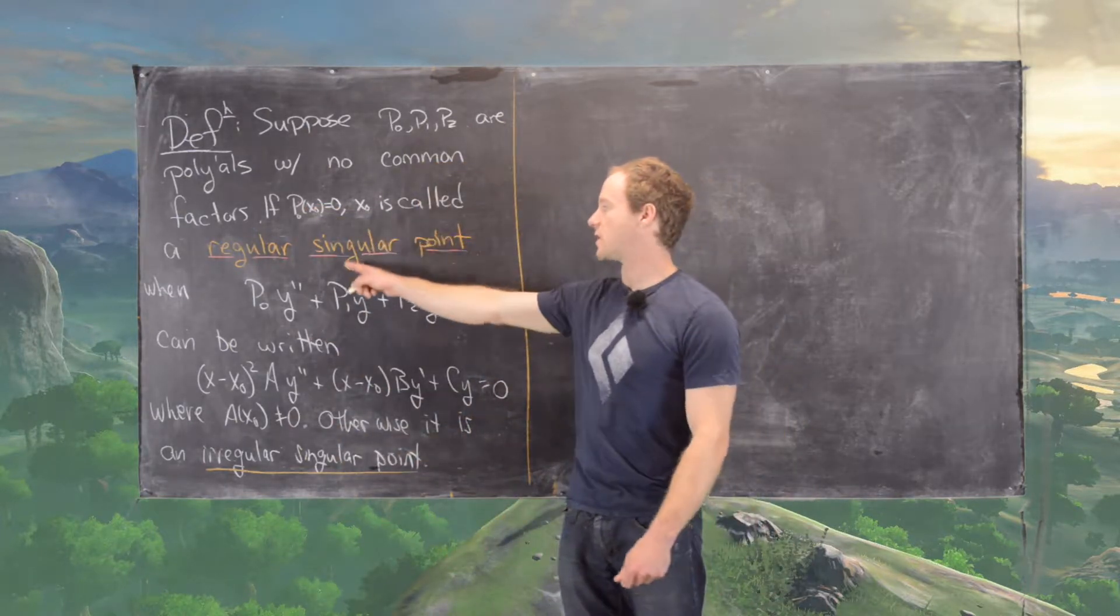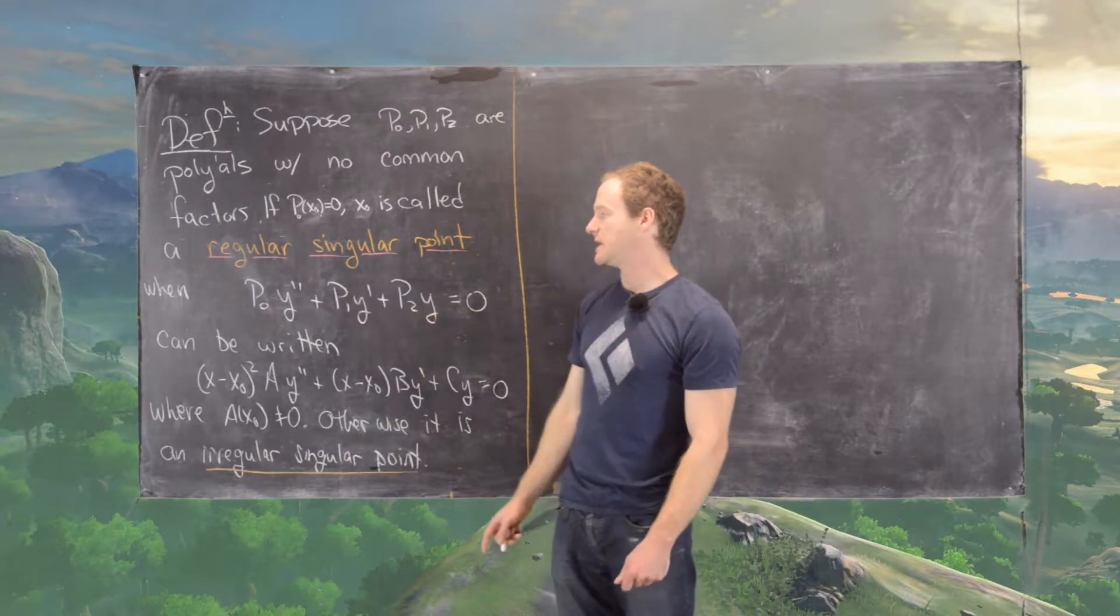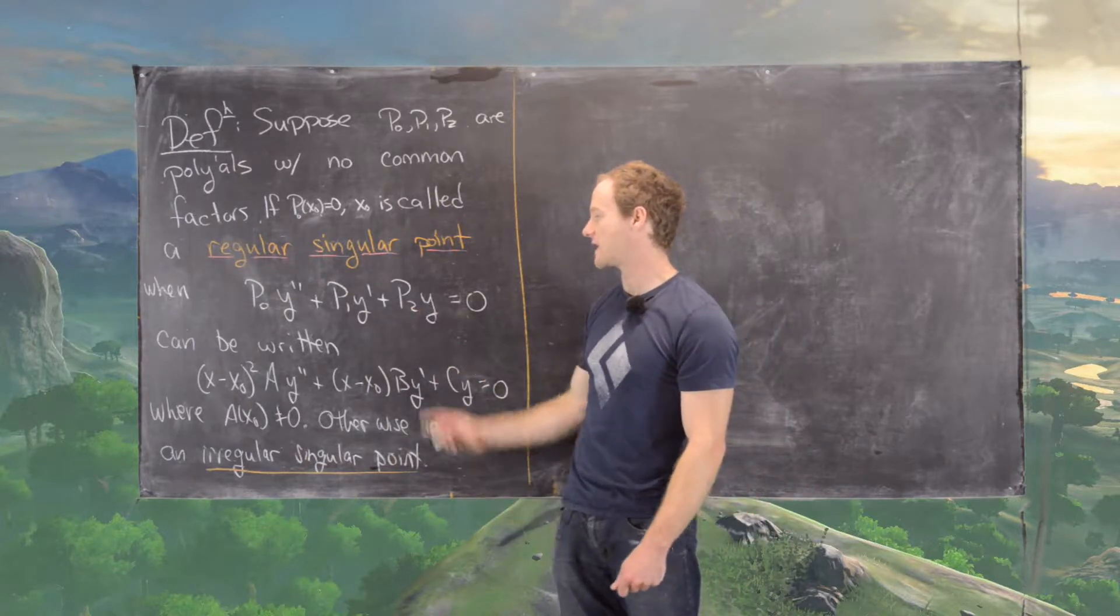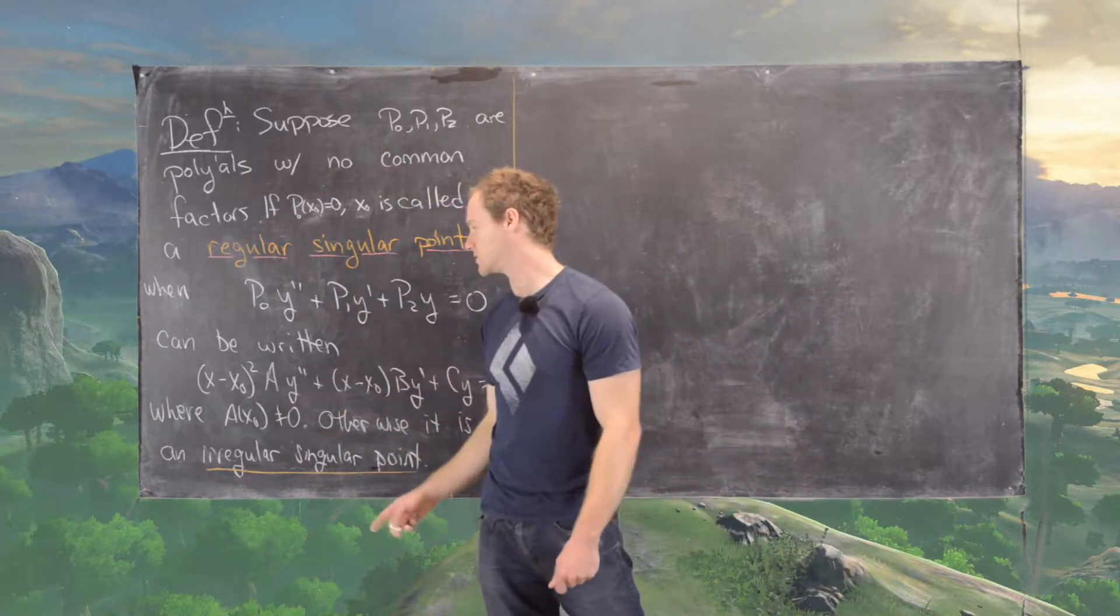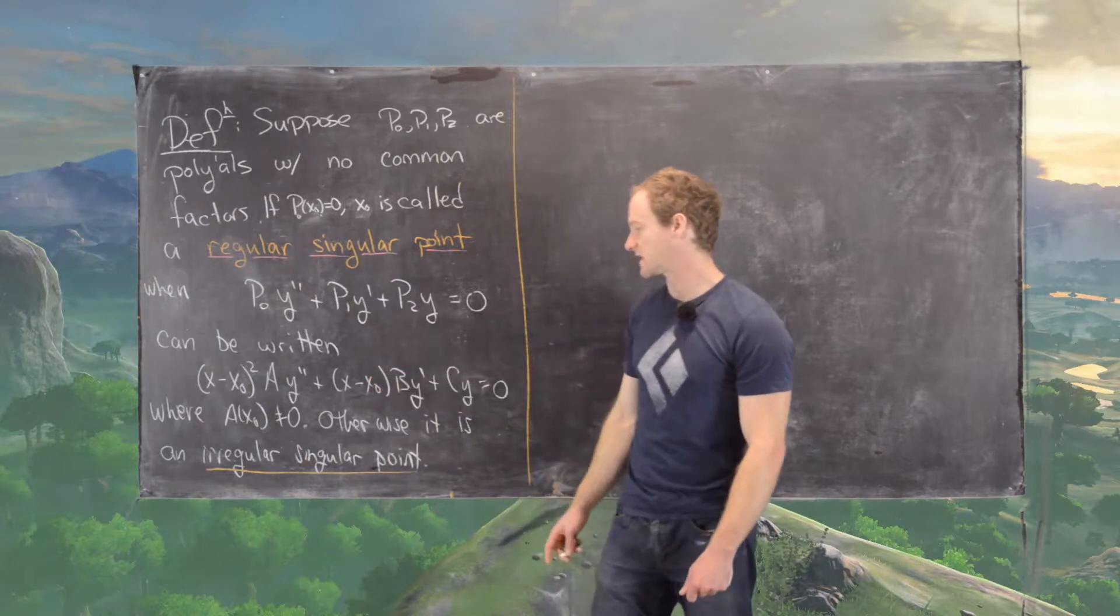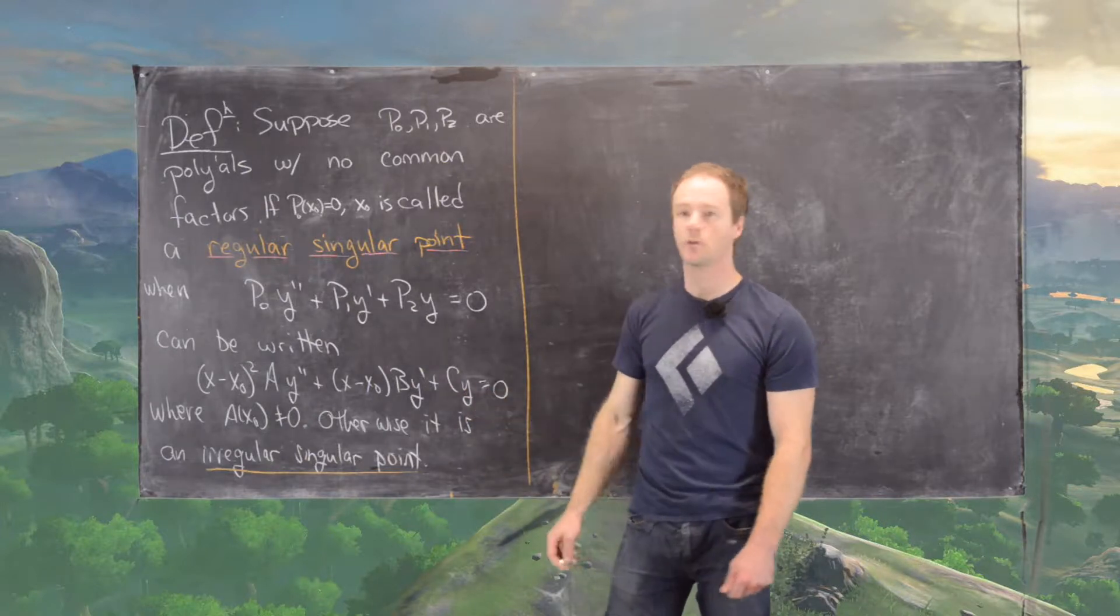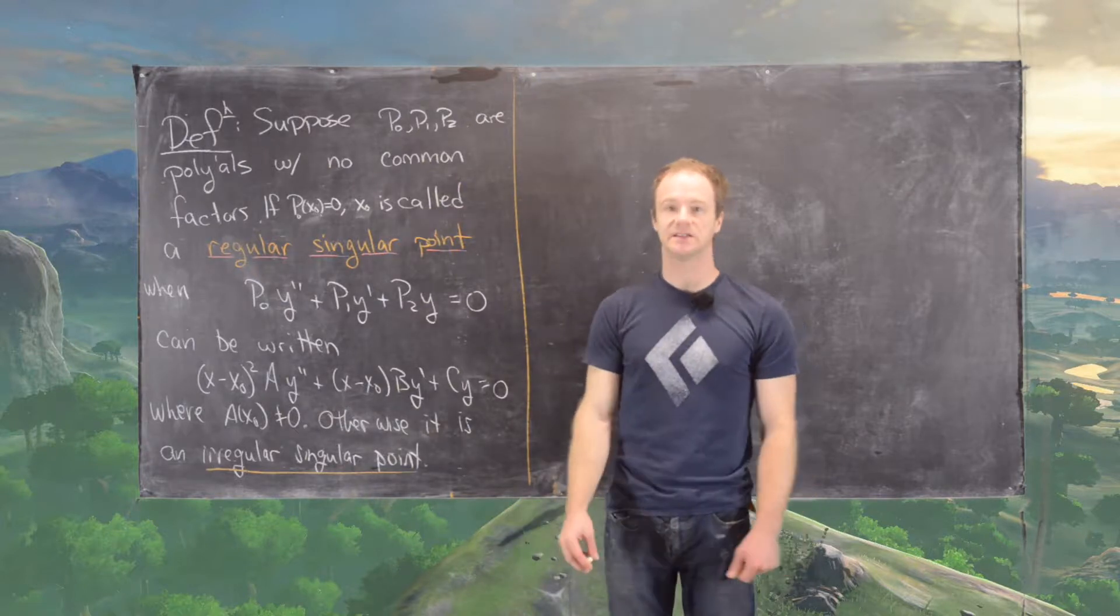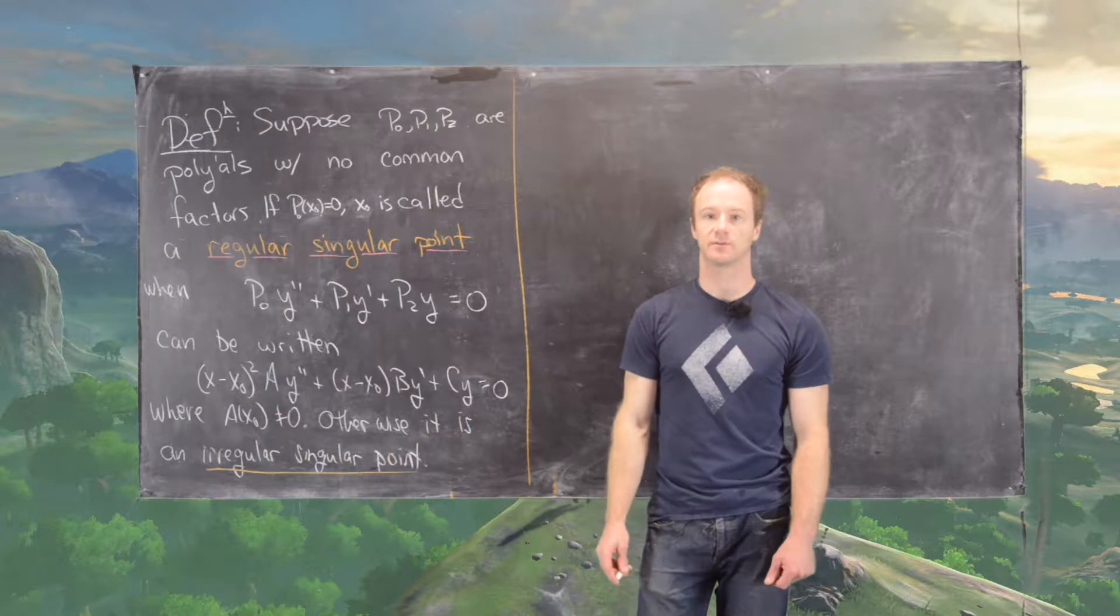Now this x0 is called a regular singular point when the differential equation p0 y double prime plus p1 y prime plus p2 y can be written in this form: x minus x0 squared times a y double prime plus x minus x0 times b y prime plus c times y equals 0, where a, b, and c are polynomials satisfying a of x0 is not equal to 0. Otherwise it's called an irregular singular point.